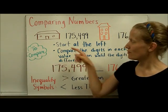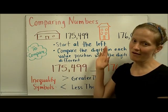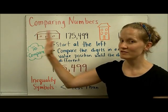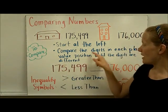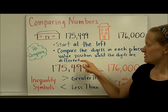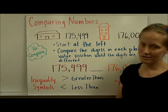In order to compare, the steps that you will follow are first start at the left. Start at the largest place value all the way to the left. Compare the digits in each place value position until the digits are different.